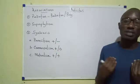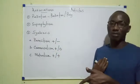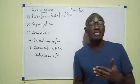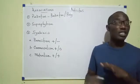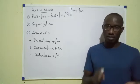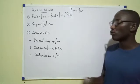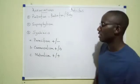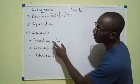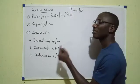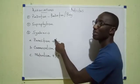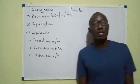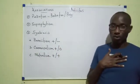In parasitism, one organism benefits while the other suffers harm. In commensalism, one organism benefits while the other is unaffected — it doesn't benefit and is unharmed. In mutualism, both organisms benefit. In parasitism, the organism that benefits is called the parasite, and the other organism is called the host. The parasite benefits, but the host loses.